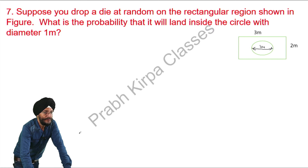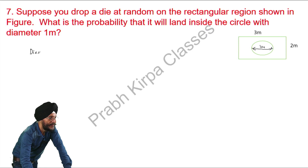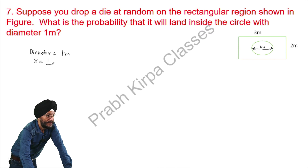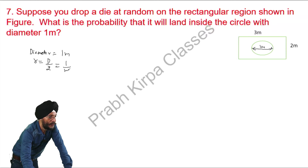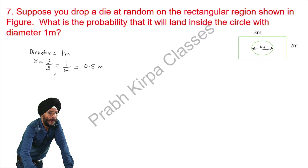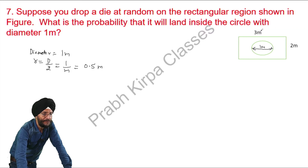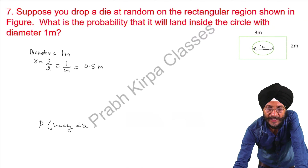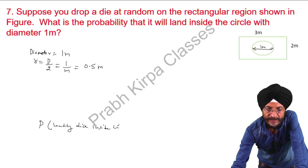So now we have to first find out what is given. The diameter of the circle is given as 1 metre. You know that the radius is one half of the diameter — diameter divided by 2, so 1 over 2 metre, that is 0.5 metre, is the radius. We need to find out the probability of landing of the die inside the circle.